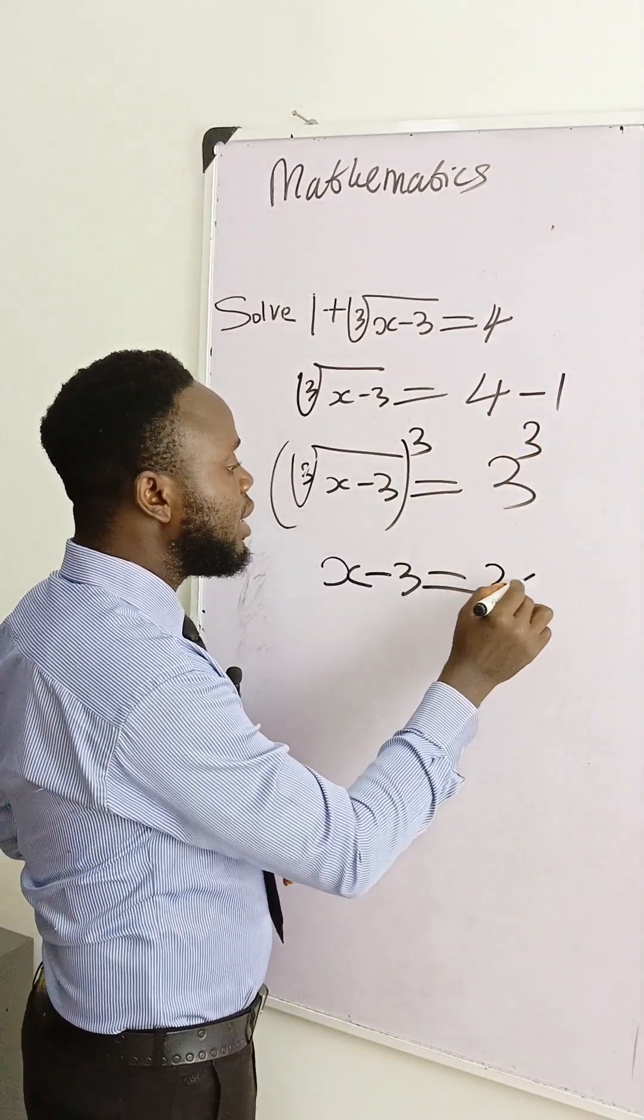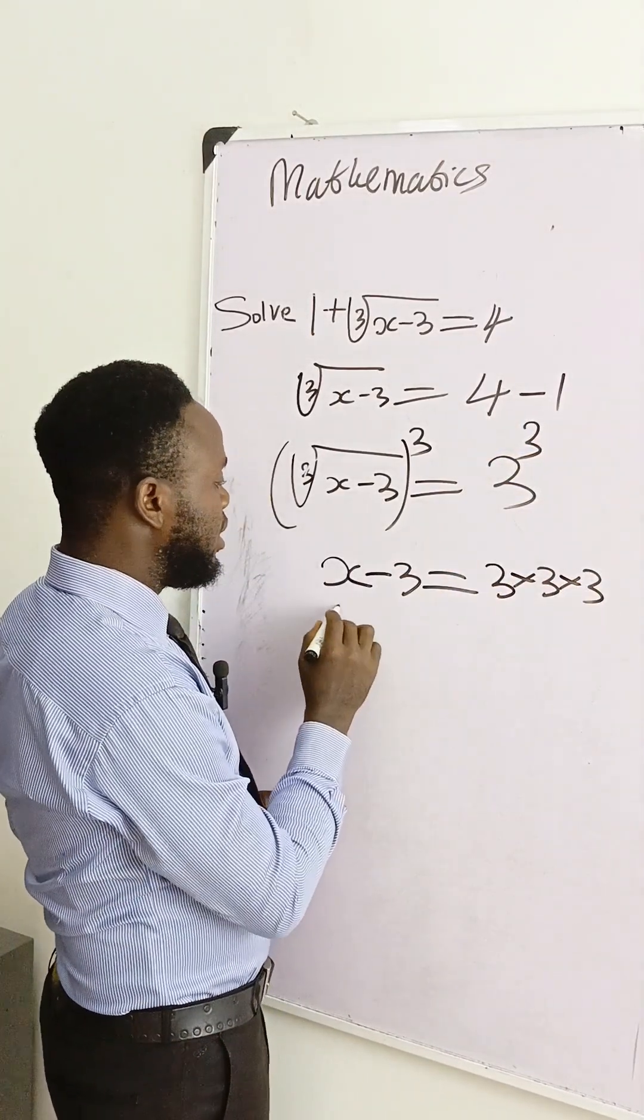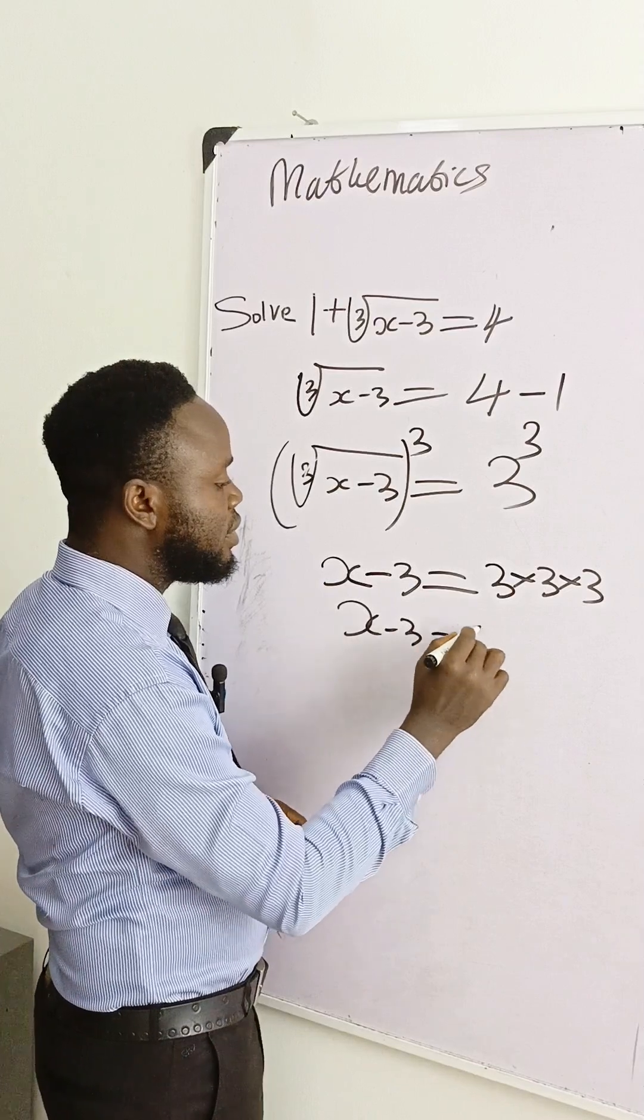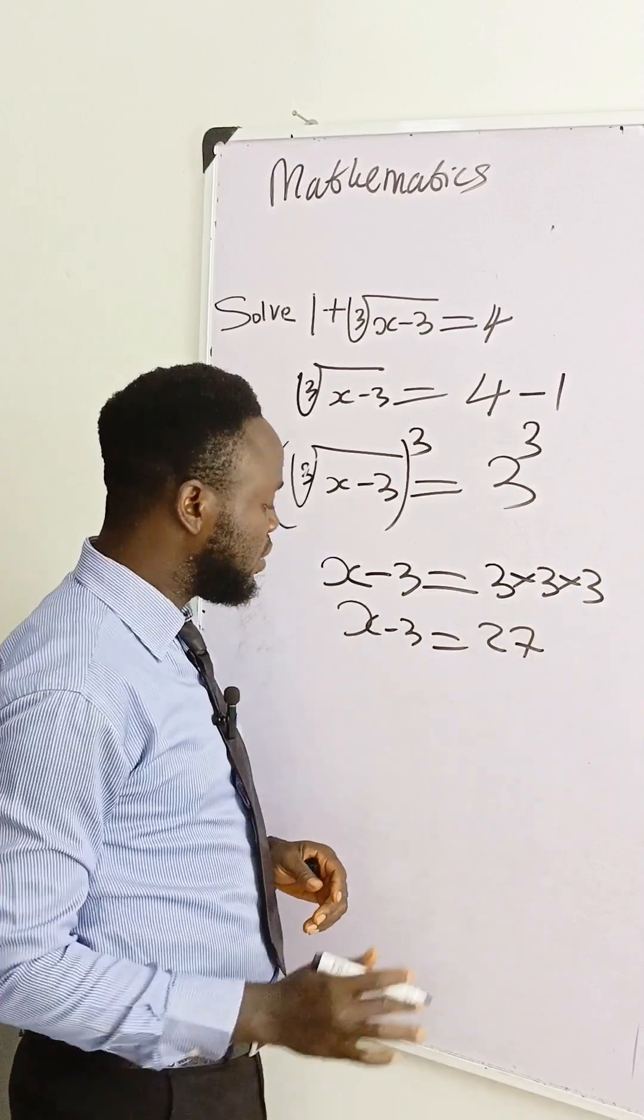And we have here x minus 3 is equal to 3 raised to power 3, means 3 times 3 times 3. And x minus 3 is 27 if we multiply three of them to give us 27.